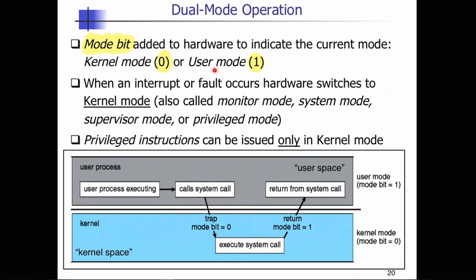If the mode bit is one, it indicates that we are in user mode; if it is zero, it indicates kernel mode. When a computer system is executing a user command, it is in user mode unless the user issues an IO. When a user application requests a service from the operating system via a system call, it must transition to kernel mode to fulfill the request. While it transitions to kernel space, the mode bit is changed from one to zero.